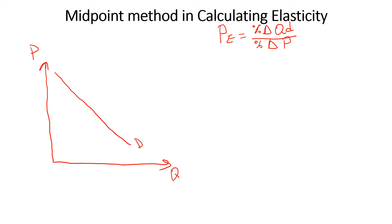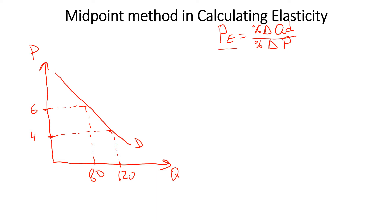Remember, demand is a downward slope. When the price of the product is 6, quantity demanded is equal to 80. And when the price of the product is 4, quantity demanded is going to increase to 120 units.